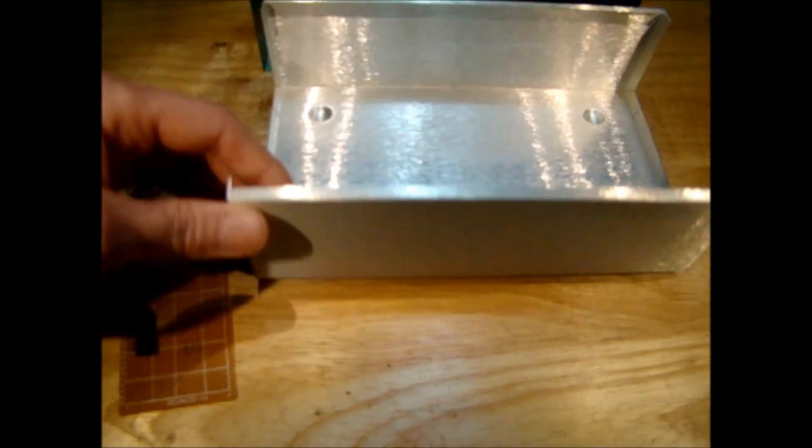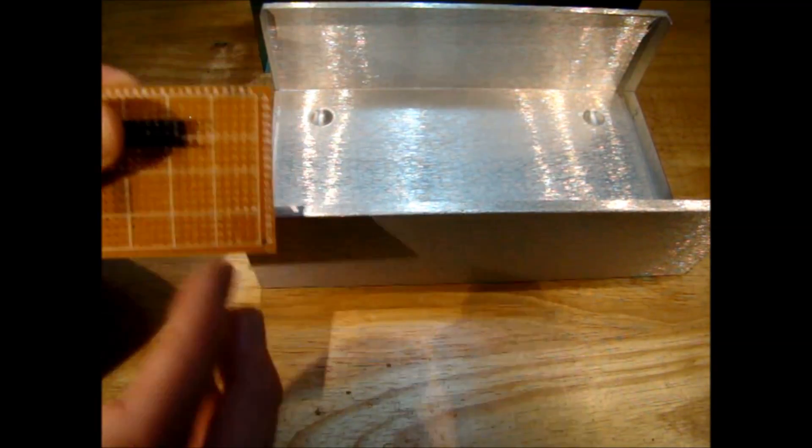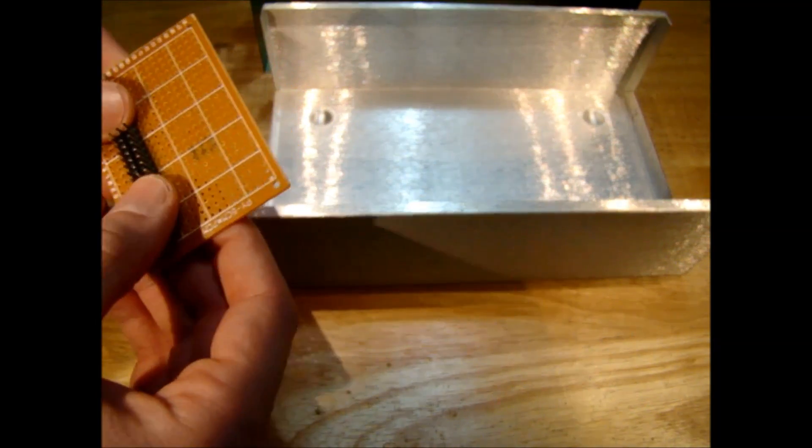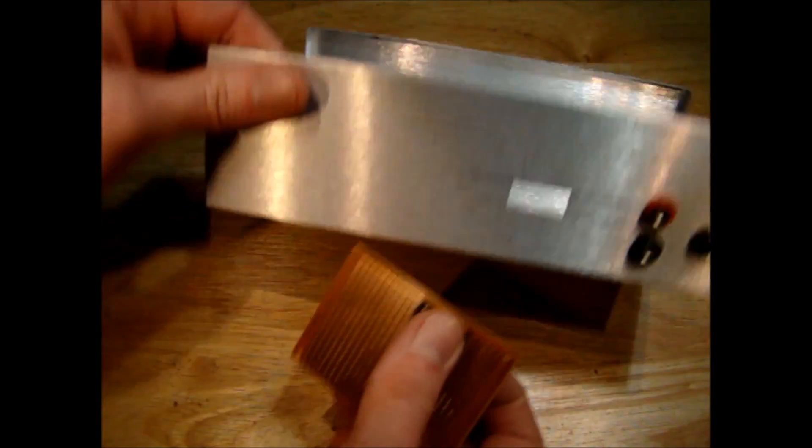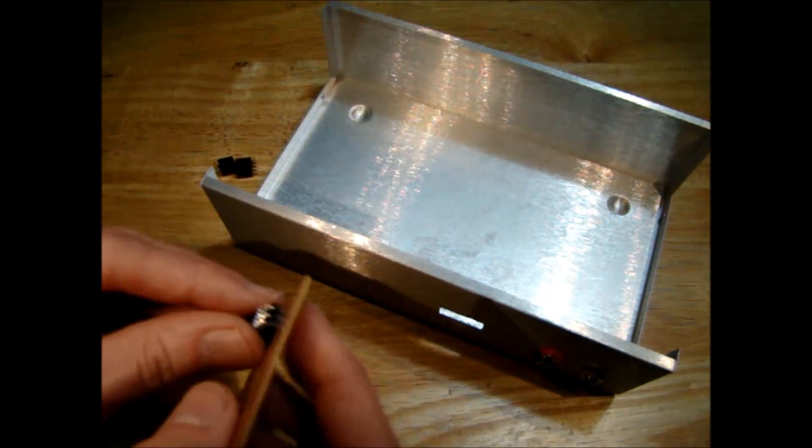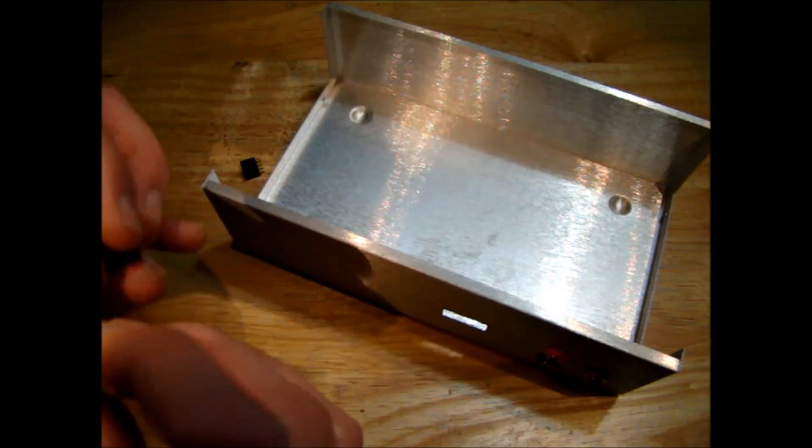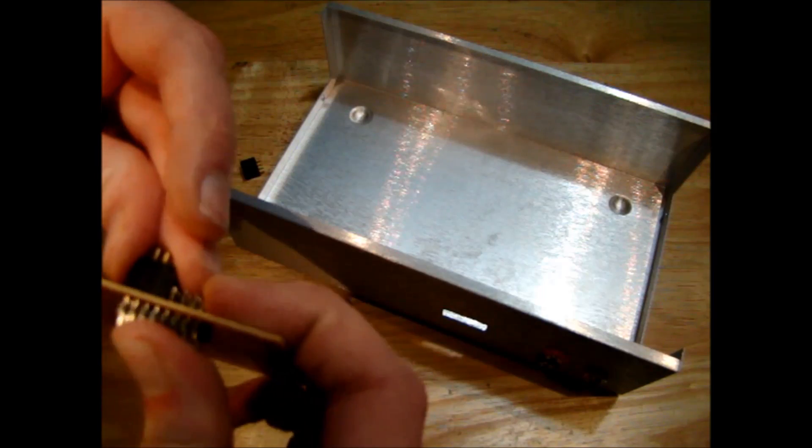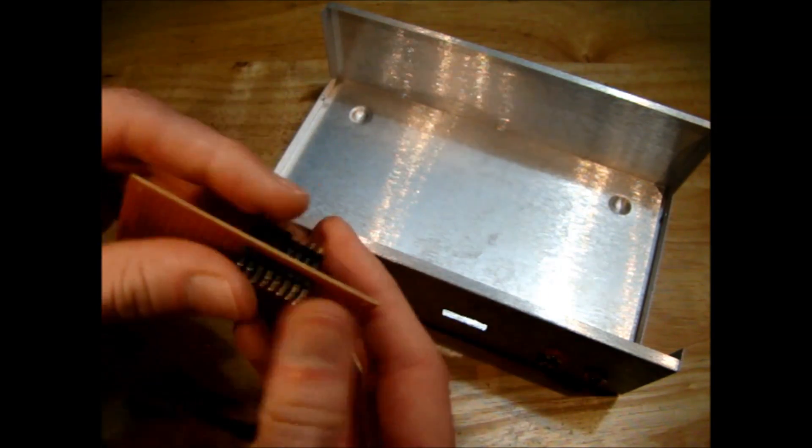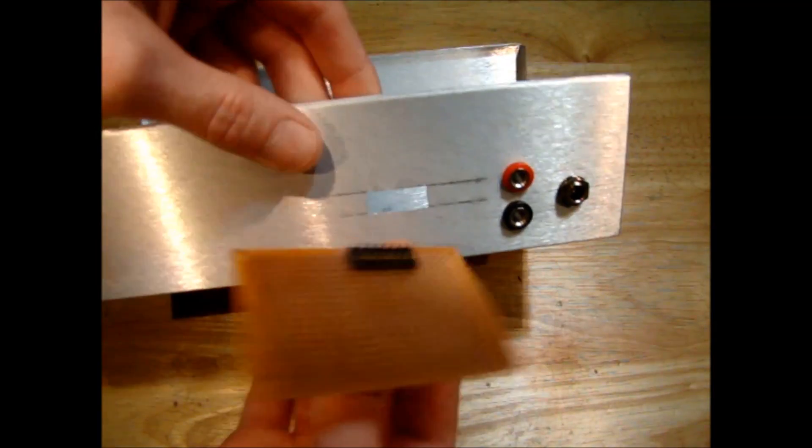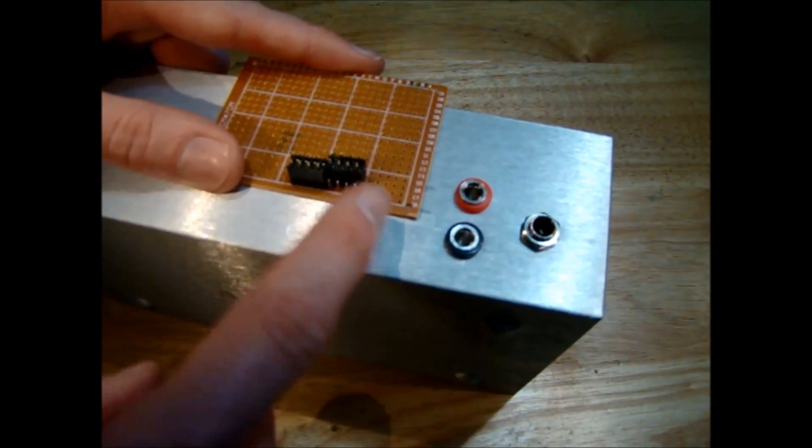I'm going to start at the back of the enclosure here. I need to make the banana jacks, the DC jack, and also the header that's going to connect to the servos. I need to put the mounting holes for the headers on the back. What I'm going to do to mark it out is push the header through the board and fix it in place with some of this female header. Now I can just place the header inside the hole here, line it up, drill my two mounting holes, and then I'll have the holes drilled through the PCB and through the aluminum case so my mounting holes will line up perfectly.